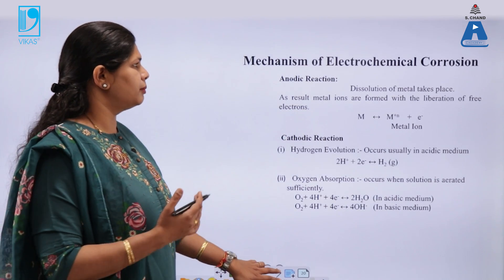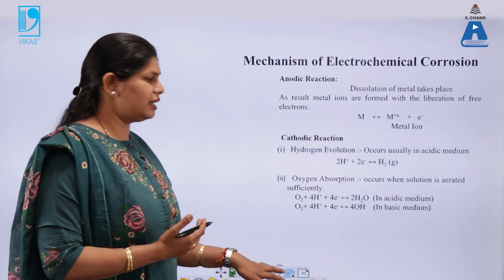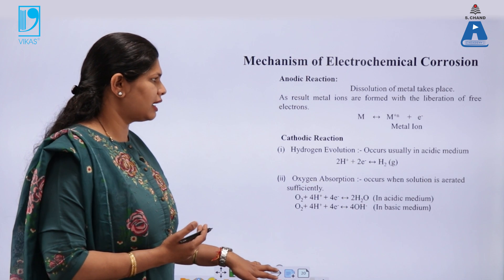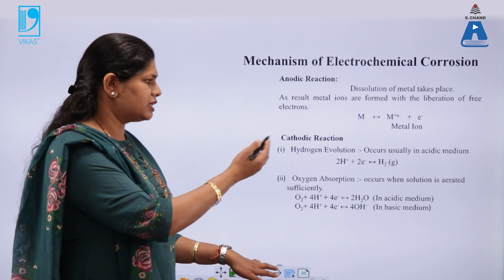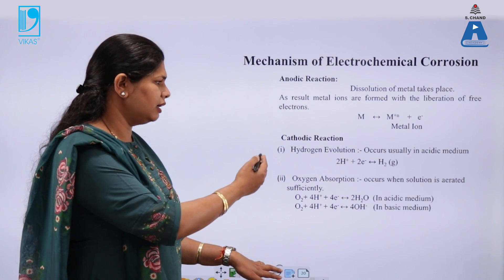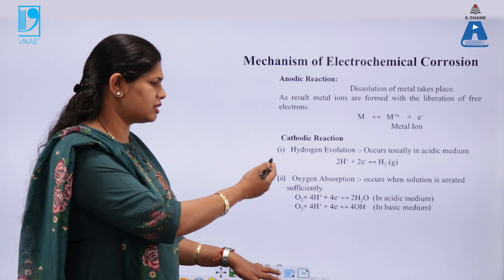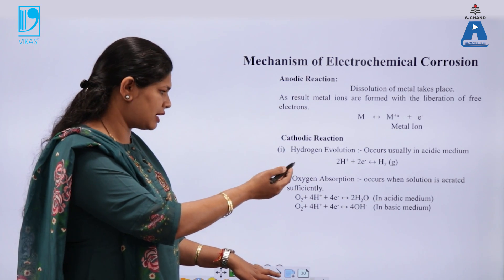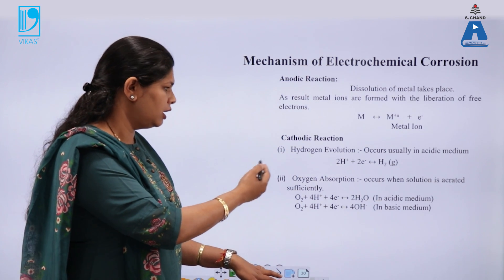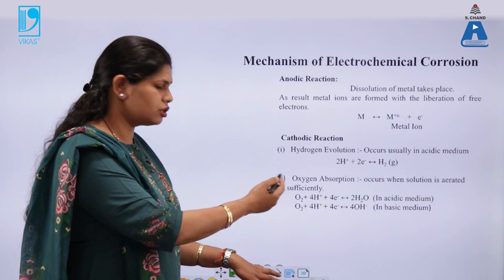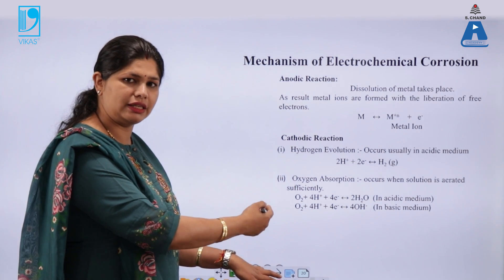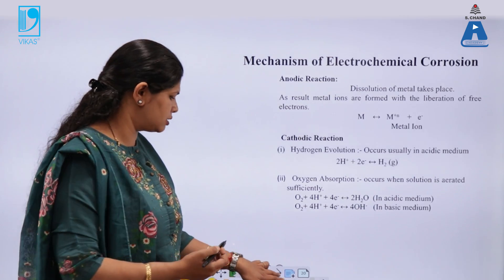These are the mechanisms of electrochemical corrosion: metal ions deplete at the anodic part; at the cathodic part, it is hydrogen gas evolution. If it is oxygen absorption, then those are the corresponding reactions.